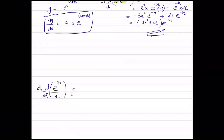For part d, is everyone getting e to the power of 2x times 2x minus 1 upon x squared? Yes, that is correct.